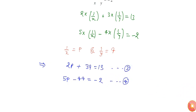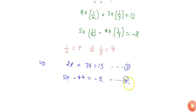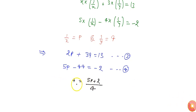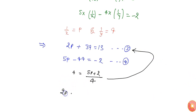By using equation number 3 and equation number 4, we can get the value of p and q. I am using the substitution method. If I substitute the value of q from equation 4, the value of q will be (5p plus 2) divided by 4.